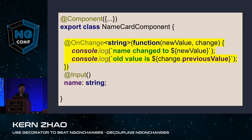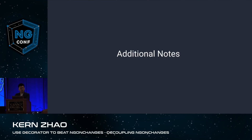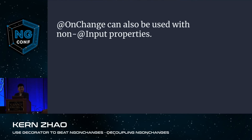What we can achieve is huge. Whenever we want to listen to the change of a name property, we just add the onChange decorator with @Input on top of the property, then provide a callback function. Whenever name is changed, the callback will be triggered and will have access to the new value and additional information from SimpleChange.